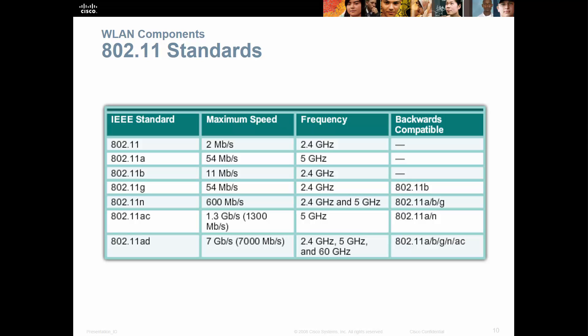Wi-Fi standards are important for exams. We had the traditional 802.11 at 2 Mbps, then A, B, G, N, and currently AC. AD is still a draft. You need to know speed and frequency for each. For example, 54 Mbps at 2.4 GHz would be 802.11g. AC and its variations are the current standard.